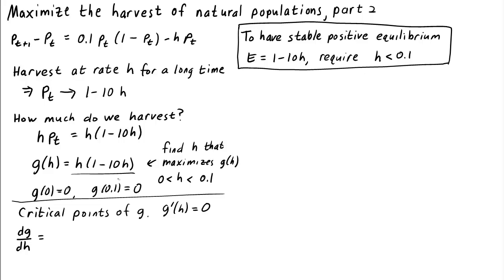G is a product of two factors, so we should use the product rule. The first factor is H. The derivative of H with respect to H is just 1. So we get 1 times the second factor, 1 minus 10H, plus the first factor, H, times the derivative of 1 minus 10H. The derivative of 1 minus 10H with respect to H gives us just negative 10. So DG/DH is 1 minus 10H minus another 10H, so it's 1 minus 20H.